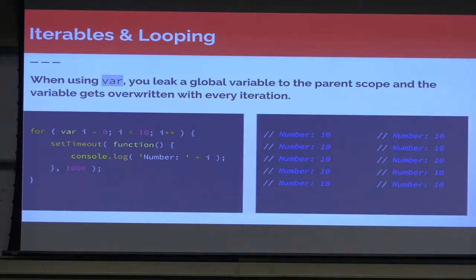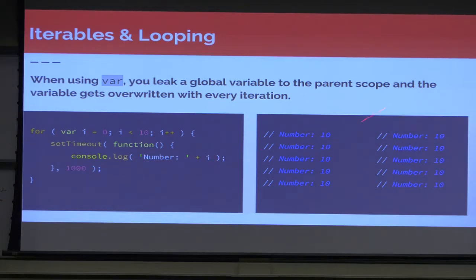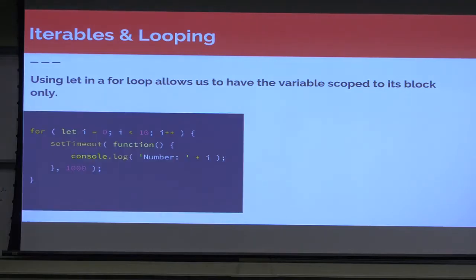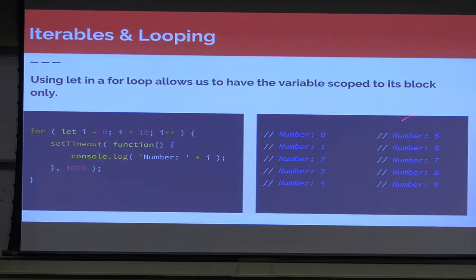We're going to get the number 10 printed 10 times. That's because by the time this setTimeout runs — and this is just an example, imagine this is an Ajax request or some other long-running process — by the time it actually runs this console.log after one second, i is always 10. This isn't helpful. Now if we use let in a for loop, it allows us to have the variable scoped to that block. It's exactly the same code, we just change var to let. And what does that give us? Exactly what we want: 0, 1, 2, 3, 4, 5, 6, 7, 8, 9.